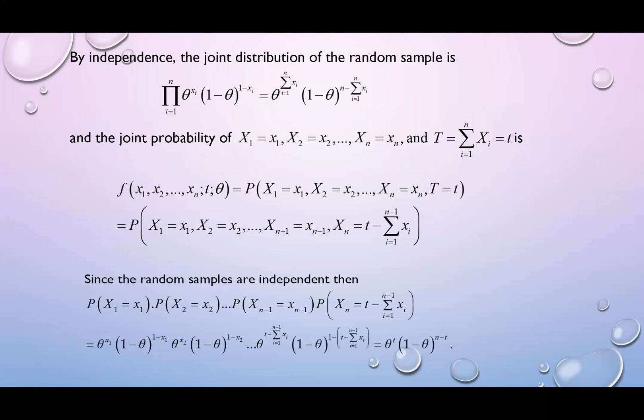So since the random samples are independent, then we can multiply the probability. So this one will result as theta^x1, 1 minus theta^(1 minus x1), theta^x2, 1 minus theta^(1 minus x2), theta to the power t minus sum xi, i equals 1 up to n minus 1 and 1 minus theta to the power 1 minus t minus sum xi. So simplify this one, we will have theta to the power t, 1 minus theta to the power n minus t. So that means you have minus x1 minus x2 minus sum xi, so cancel out this one. You have 1, 1, 1, so you have n and then minus t.